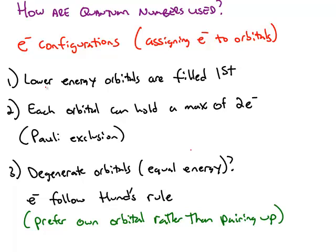First, the electrons are going to be filling the lower energy orbitals first. Each orbital can hold a maximum of two electrons. This is called the Pauli Exclusion Principle, because if you put more than two electrons into an orbital, two of them will have to have the same set of four quantum numbers, which is not possible.